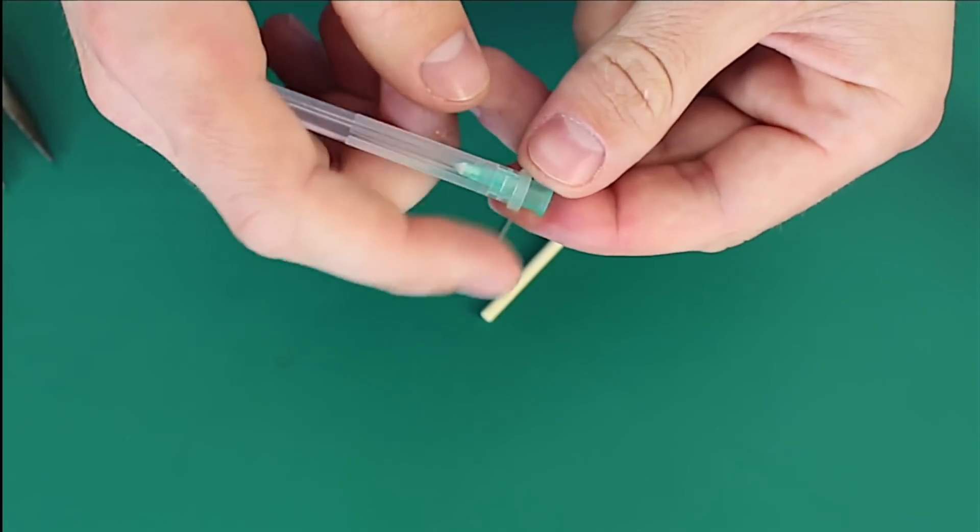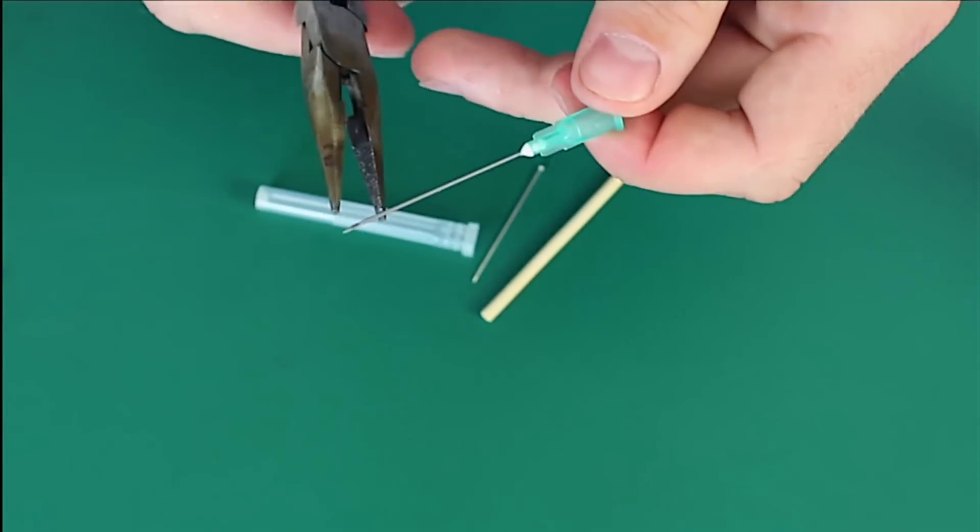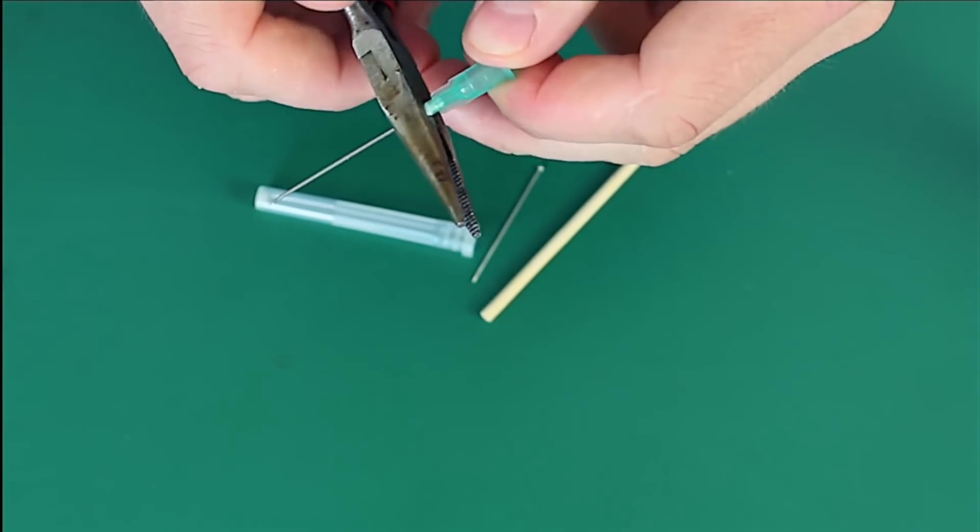Firstly, we have to bite off the nose from the syringe needle. You can do this with the help of nippers or pliers.